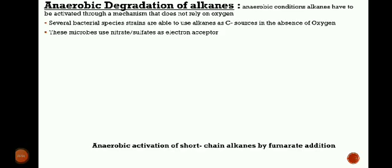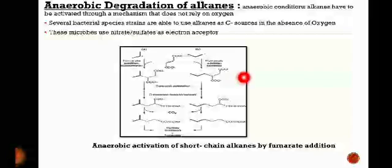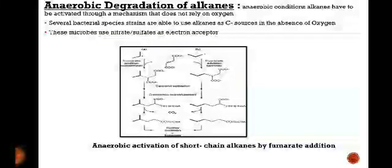Under strictly anaerobic conditions, alkanes must be activated through a mechanism that does not rely on oxygen. Several bacterial species are able to use alkanes as a carbon source in the absence of oxygen; these microbes use nitrate or sulfate as electron acceptors. Here is a figure showing the anaerobic activation of short-chain alkanes by fumarate addition. Two general strategies have appeared: one involves activation of the alkane at a subterminal position by addition of a fumarate molecule to the alkane, yielding an alkylsuccinate derivative.